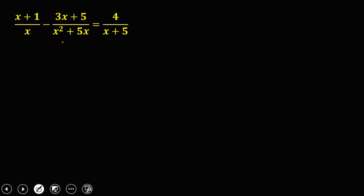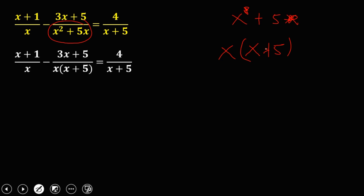For the next example, check if we can factor any denominators. We can factor x squared plus 5x by pulling out x, giving x times x plus 5. This is our new equation. To find the LCD: put the first denominator x, then for the second denominator we already have x so just add x plus 5, and the third denominator already has x plus 5 so no need to add it. This is now the LCD.